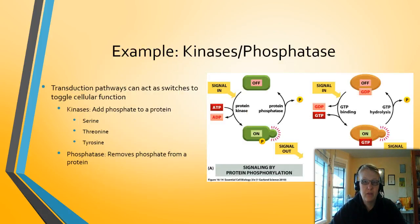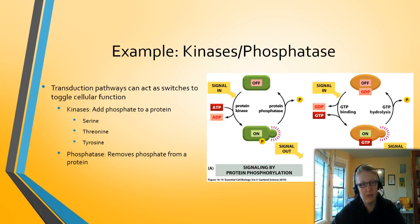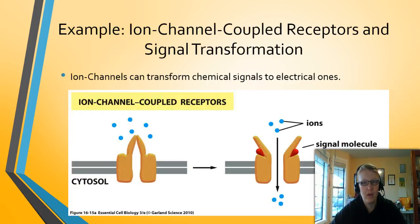Let's look at an example of signal transduction pathways using molecular switches, which allow something to turn on and turn off. These processes use kinases and phosphatases. Kinases add a phosphate to a protein — there are three types: serine, threonine, and tyrosine kinases. Phosphatases remove the phosphate from the protein. It's tempting to think adding a phosphate always turns something on and removing it turns it off, but that's not always the case — adding a phosphate can also turn off a protein. We'll see how this works in GPCRs and enzyme-coupled receptors in the next two topics.